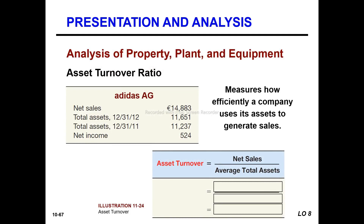In the analysis of property, plant, and equipment, the asset turnover ratio measures how efficiently a company uses its assets to generate sales. The formula is: Net Sales divided by Average Total Assets.